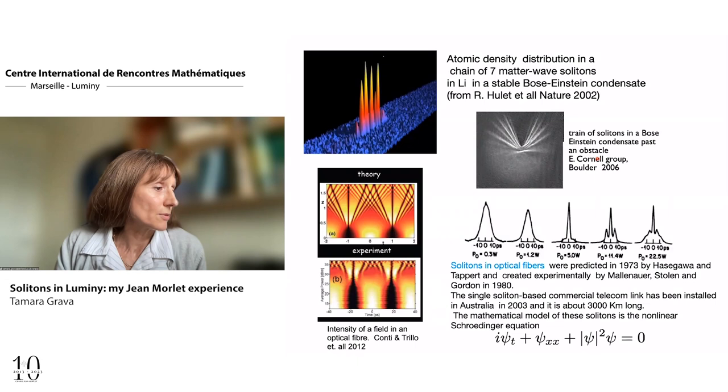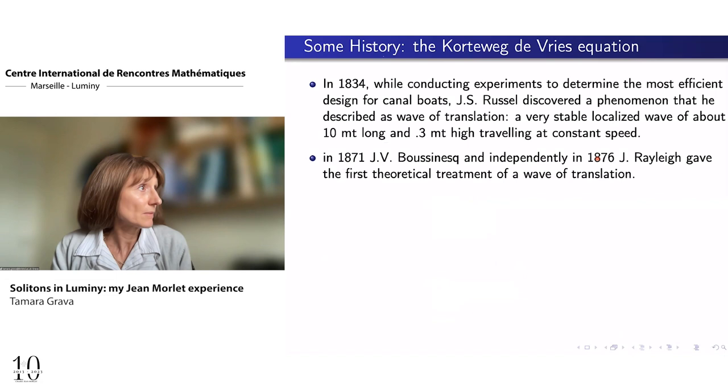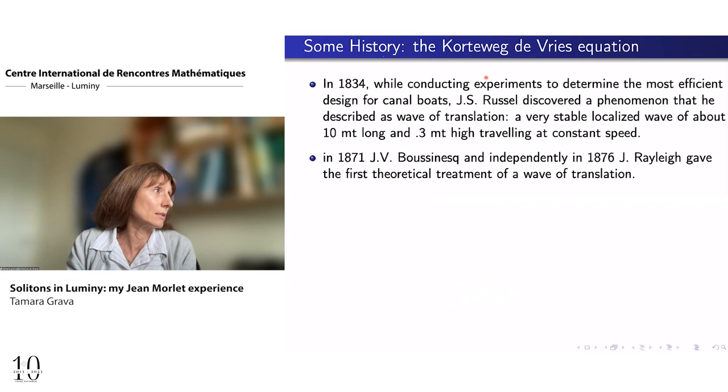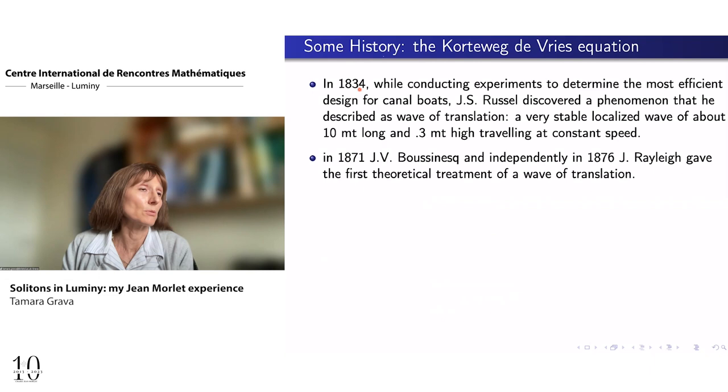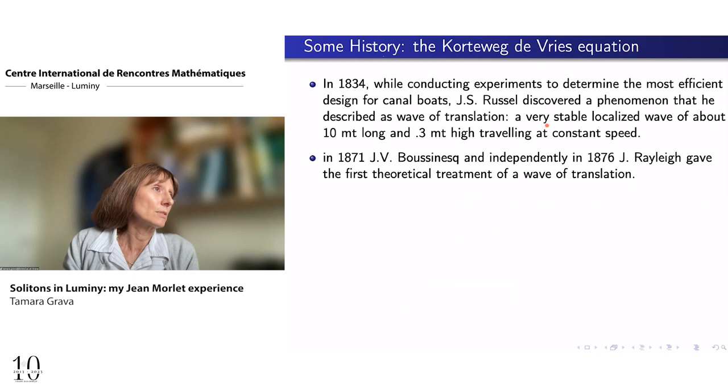Okay. So this is the appearance of solitons in nature. Now, let me give some history. So the first description of a soliton comes back in 1834 by John Russell, who was an engineer and was conducting an experiment to describe the most efficient way to design a canal for boats. And what he observed, he was surprised. He observed a wave which was about 10 meters long and 30 centimeter high, which propagated for about one mile. So 1.8 kilometers at constant speed without changing its shape. And so this discovery was then studied independently about 40 years later by Boussinesq and independently by John Rayleigh. And they gave the first theoretical description of this kind of wave. So they produced a model.